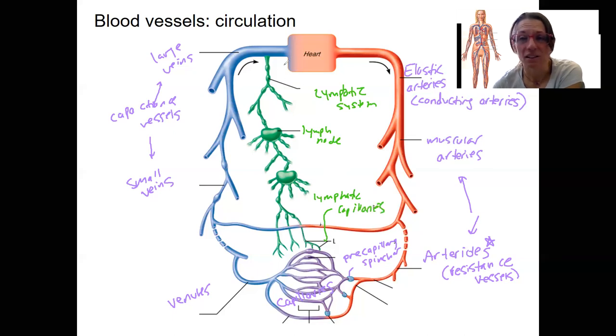I just want you to see that the lymphatic system is directly connected, right? That tube comes from this vein right here, and it also has connections with our capillaries at the level of our tissues. This is going to be important for tissue microcirculation.